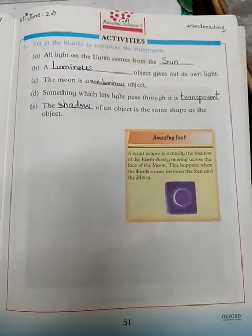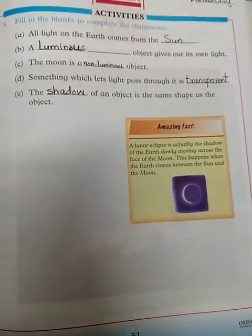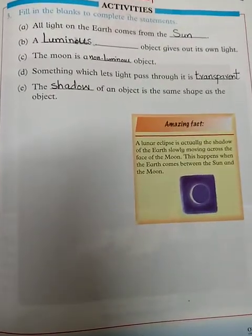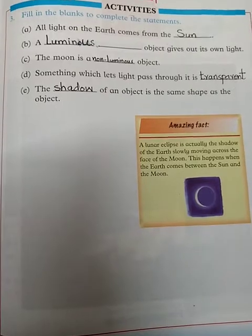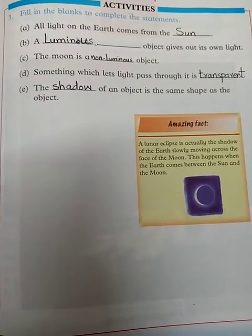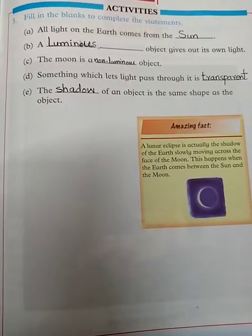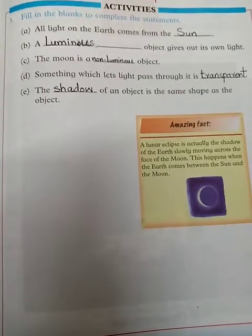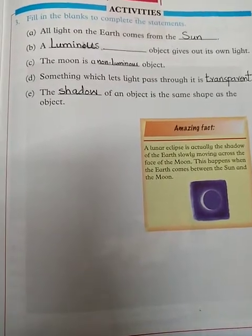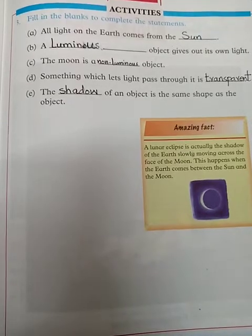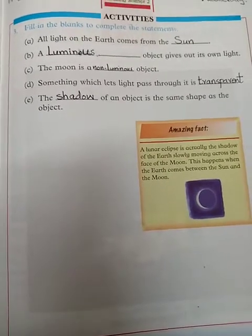Students, move to the next page — page 51 — fill in the blanks. Complete the blanks. The first one is: 'All light on the earth comes from the ___' — who gives light to the earth? The sun. So write 'Sun' here in capital letters. Sun is your first blank answer.